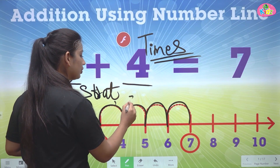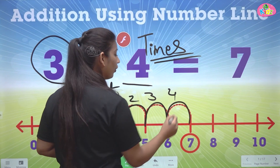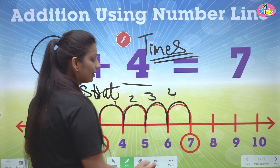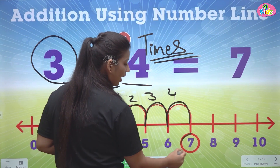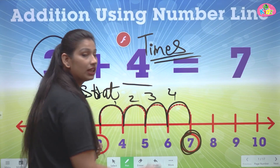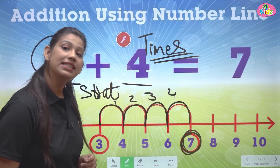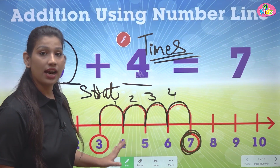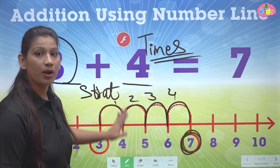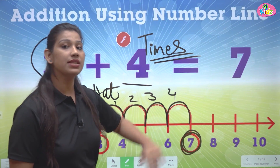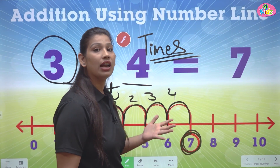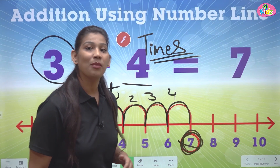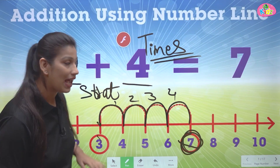One, two, three, four — and we are on number seven. We got to number seven.